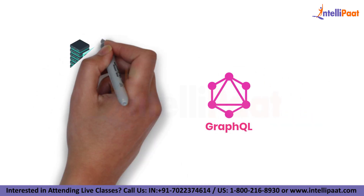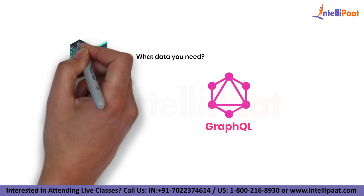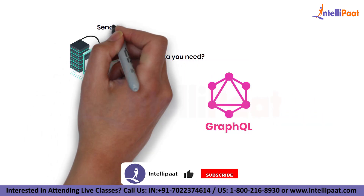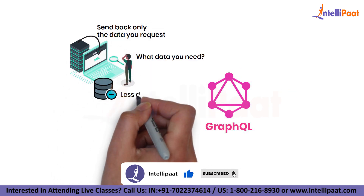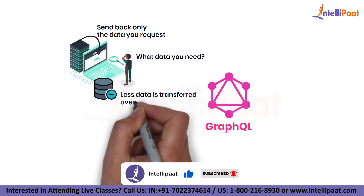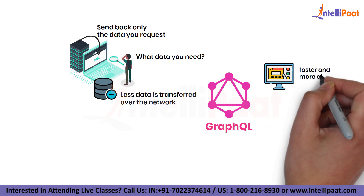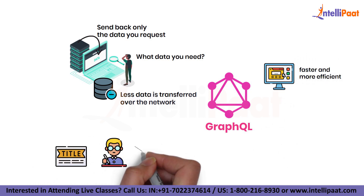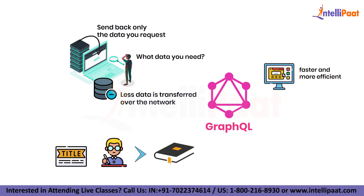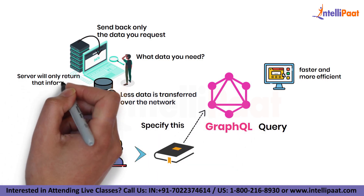With GraphQL, you can specify exactly what data you need and the server will send back only the data you request. This means less data is transferred over the network, making your application faster and more efficient. For example, if you need the title and author of a book, you can specify this in your GraphQL query and the server will only return that information.